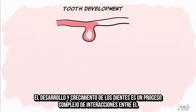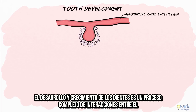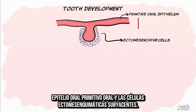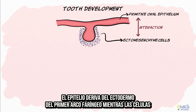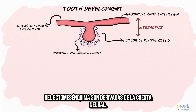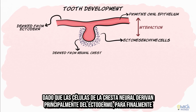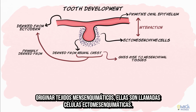The development and growth of teeth is a complex process of interactions between the primitive oral epithelium and the underlying ectomesenchymal cells. The epithelium is derived from the ectoderm of the first pharyngeal arch, while the cells of the ectomesenchyme are neural crest in origin. Since the neural crest cells are primarily derived from the ectoderm and eventually give rise to mesenchymal tissues, they are called ectomesenchymal cells.